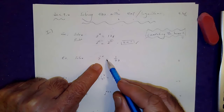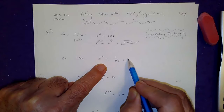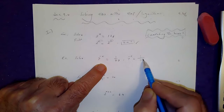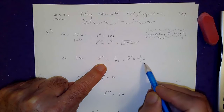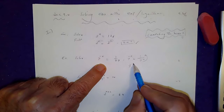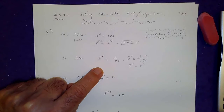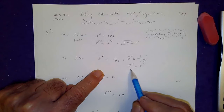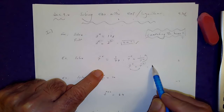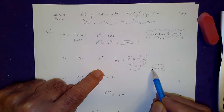Sometimes you have 7 to the power of negative x equals 1 over 49. Remember, 1 over 49 is the same as 1 over 7 squared, so put that on top: 7 to the negative x equals 7 to the power of negative 2. You match the bases, set the powers equal, so negative x equals negative 2, and x is equal to 2.